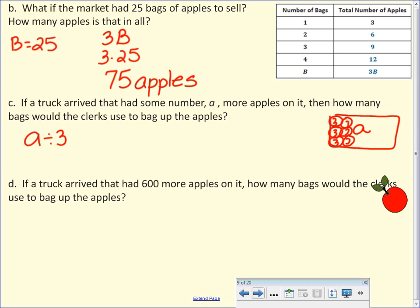So if a truck arrived that had 600 more apples in it, how many bags would the clerk use? So if it's A divided by three, and my A equals 600. I'm going to replace my letter with my number. And then I do my division. Now, 200 what? Bags.